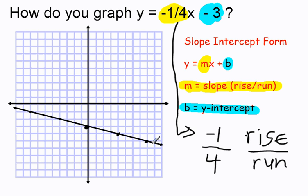To complete the process, I can simply draw a line that goes through the dots. Now this represents the entire solution set. It is the graph of the equation, y equals negative one-fourth x minus three. Thank you.